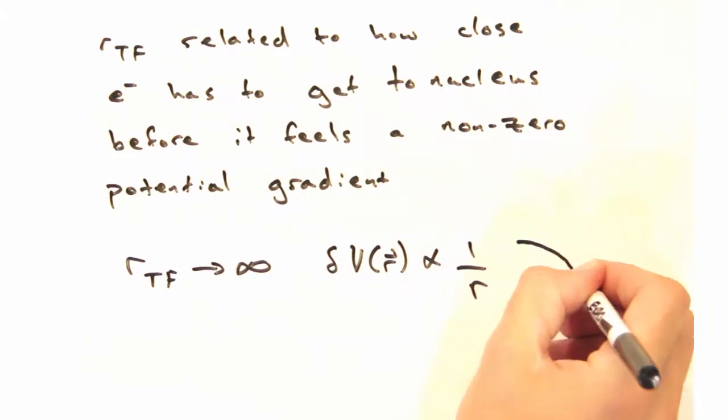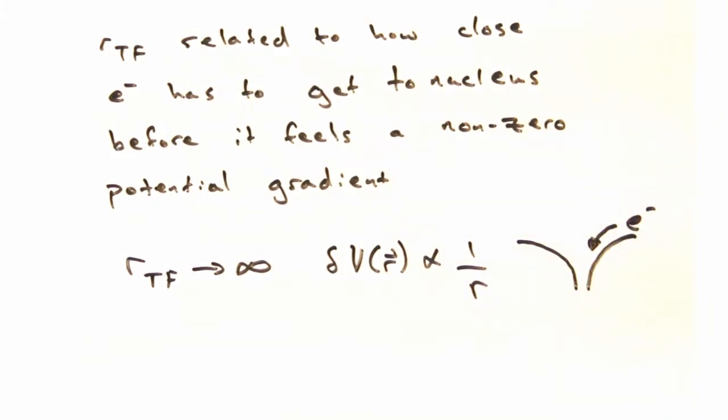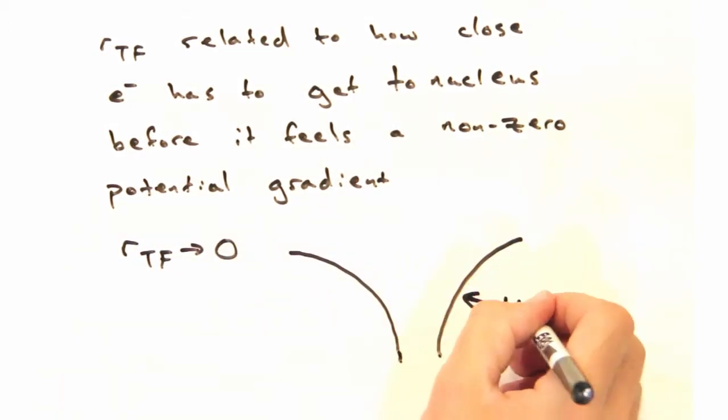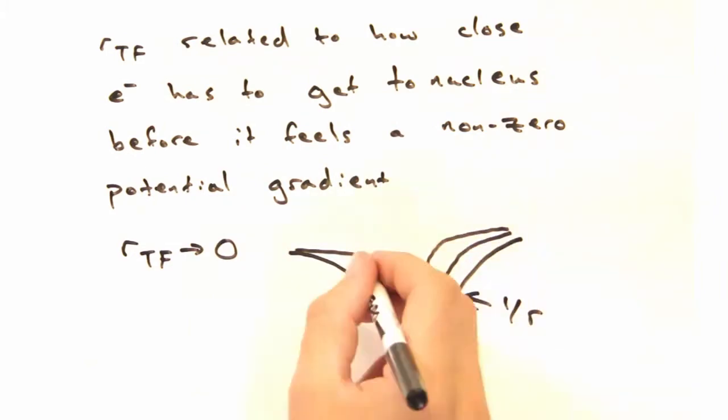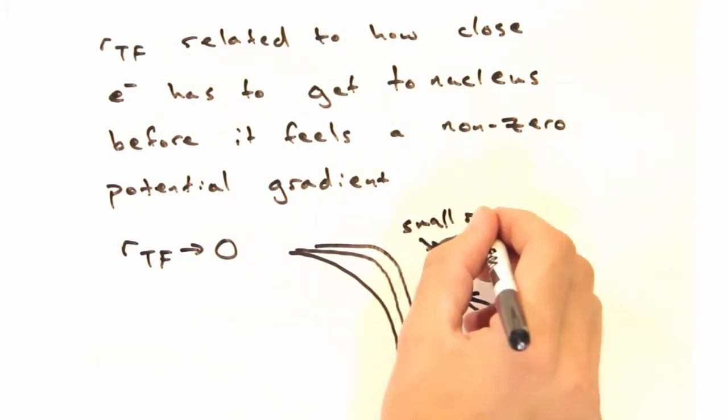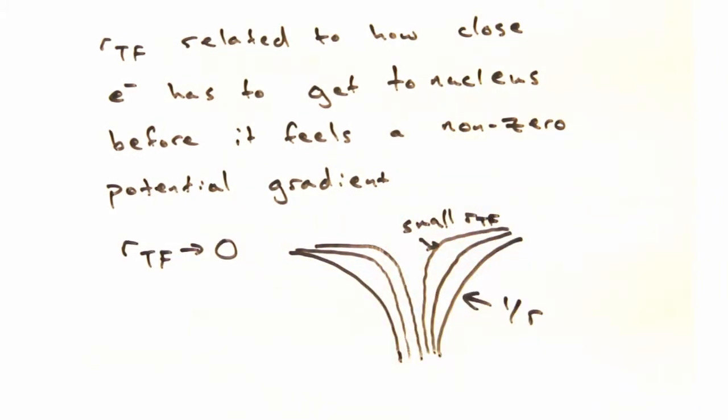Let's consider some limits. As RTF goes to infinity, our expression for the potential of perturbation goes to the unscreened 1 over R value. And at the other limit, the potential is almost like a delta function well. So the electron has to get incredibly close before feeling the attractive pull of the nucleus.